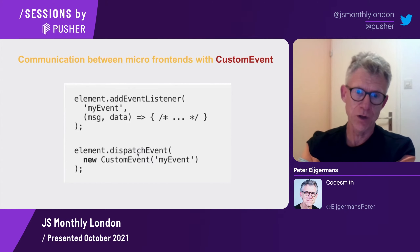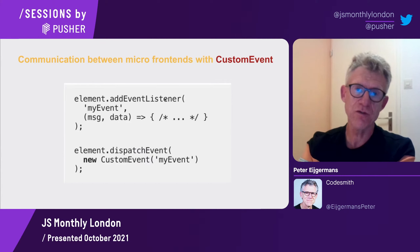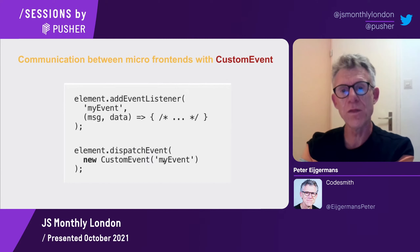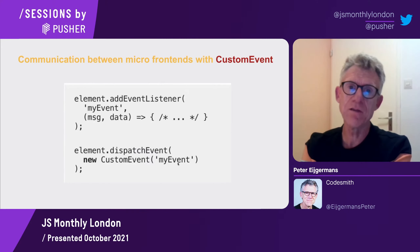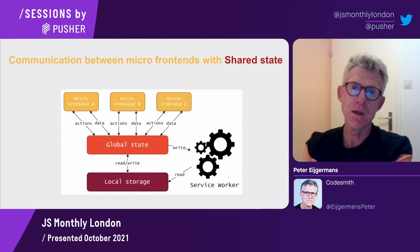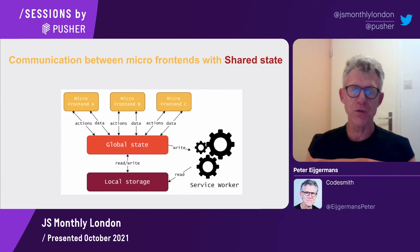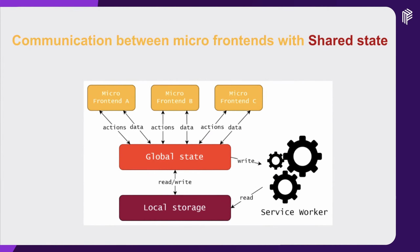Now I step over to communication between micro frontends. Globally you have two types of communication: custom events with the Web API, and shared state. With custom events, you use dispatchEvent to send an event to a listener. You can define dispatchEvent in one micro frontend and define an addEventListener listening to the same event name — 'my-event' — in another micro frontend, so they can find each other. This way you can communicate quite easily.